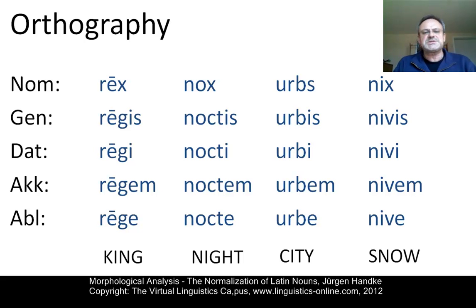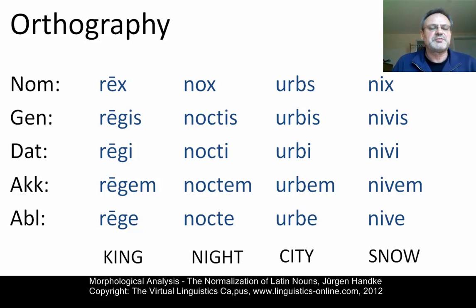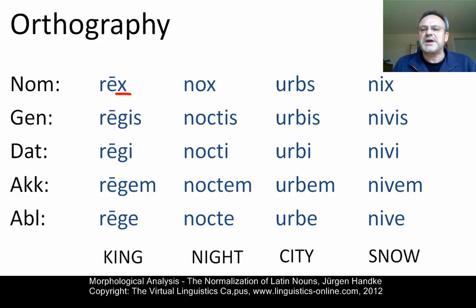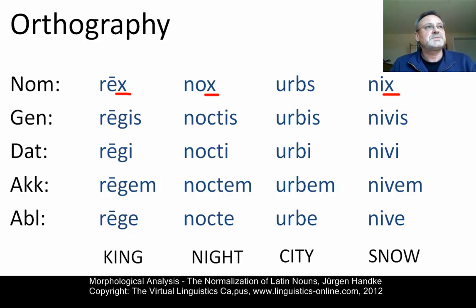Already we can see that the orthographical representation does not reflect the phonetic facts. The x does not stand for its phonetic equivalent, the voiceless velar fricative ch. So it is not rech, noch, or nich, but rex, nox and nix.